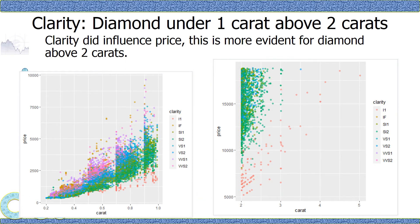I selected two subsets of the data to create the charts again. You can see the left is about diamonds under one carat and the right chart is about diamonds above two carats. Clarity did influence price. This is more evident for diamonds above two carats.